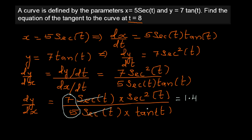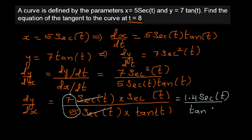I made a mistake there — I should remove an extra square. So after cancellation, this becomes 1.4 sec t divided by tan t, which we can also write as 1.4 sec²t divided by tan t. So dy/dx = 1.4 sec²t / tan t.